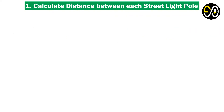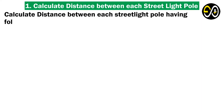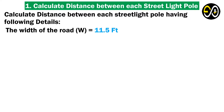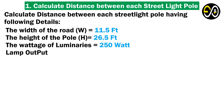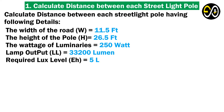Example 1: Calculate the distance between each street light pole given the following details. The width of the road W equals 11.5 feet. The height of the pole H equals 26.5 feet. The wattage of luminaires equals 250 watts. Lamp output LL equals 33,200 lumens. Required lux level equals 5 lux.